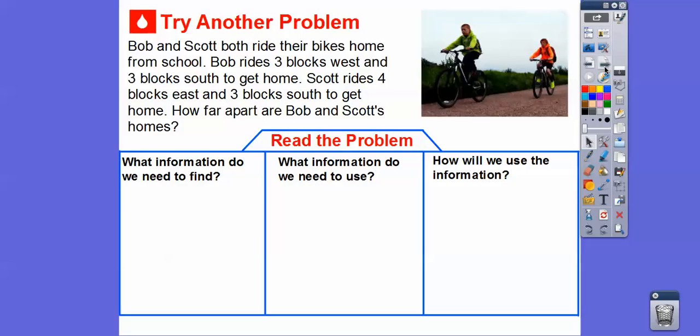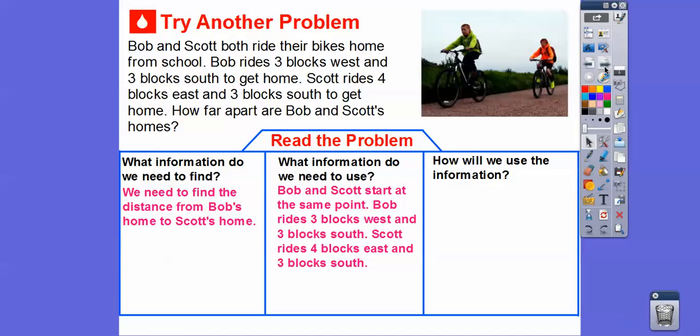So what information do we need to find? Well, we need to find the distance from Bob's home to Scott's home. And what information are we going to use? Well, Bob and Scott started at the same point, which was school. And Bob rides 3 blocks west and 3 blocks south. And Scott goes 4 blocks east and 3 blocks south.